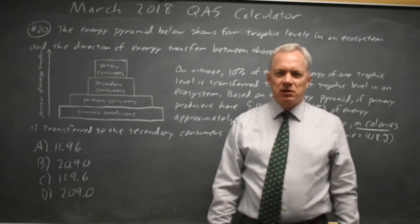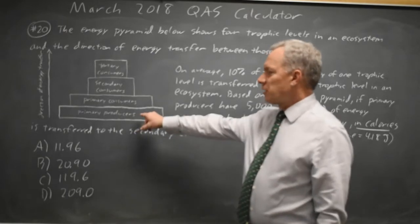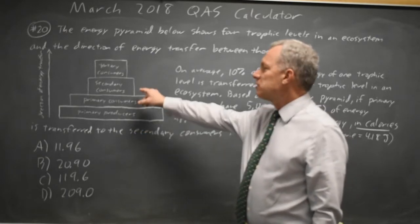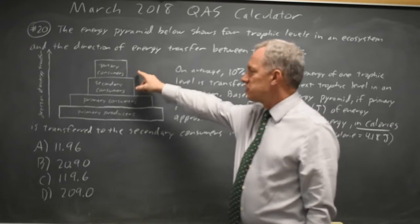This is question 20. College Board tells us there are 5,000 joules of energy among primary producers and they ask for the amount among secondary consumers. We're not going all the way to tertiary consumers here.